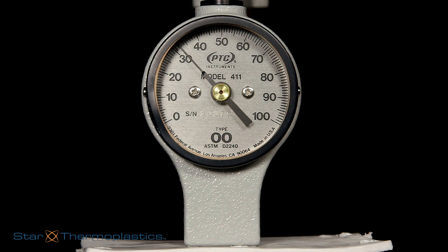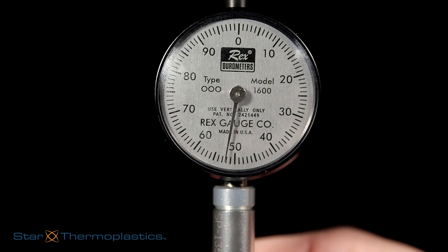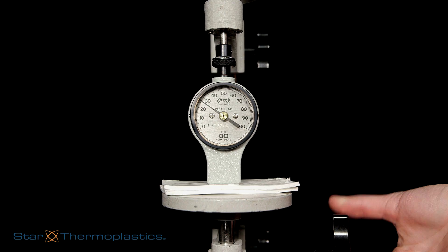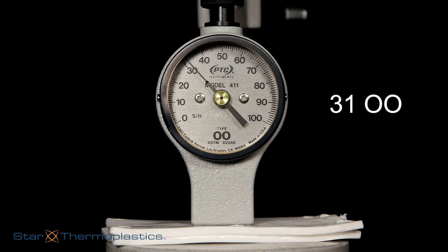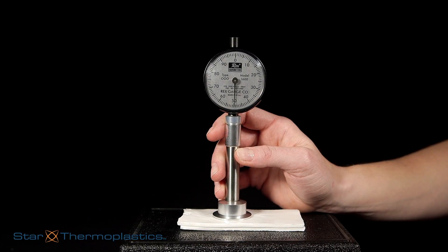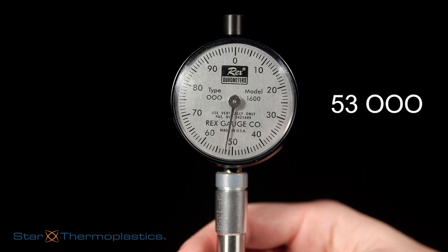All of our demonstrations will be on the Shore double and triple-aught scales. This gel TPE has a hardness of 31 double-aught. For comparison, we will also measure it on the triple-aught scale, where it shows a durometer reading of 53 triple-aught.